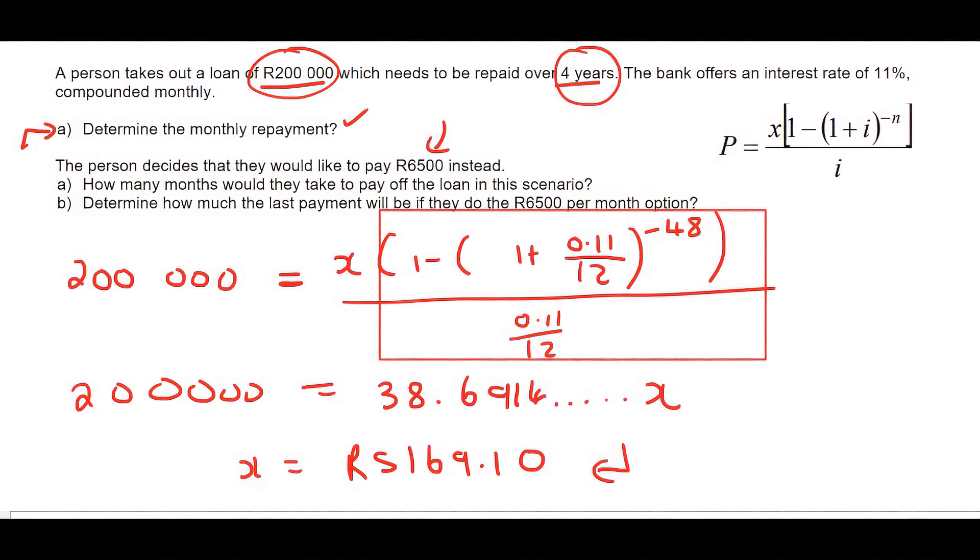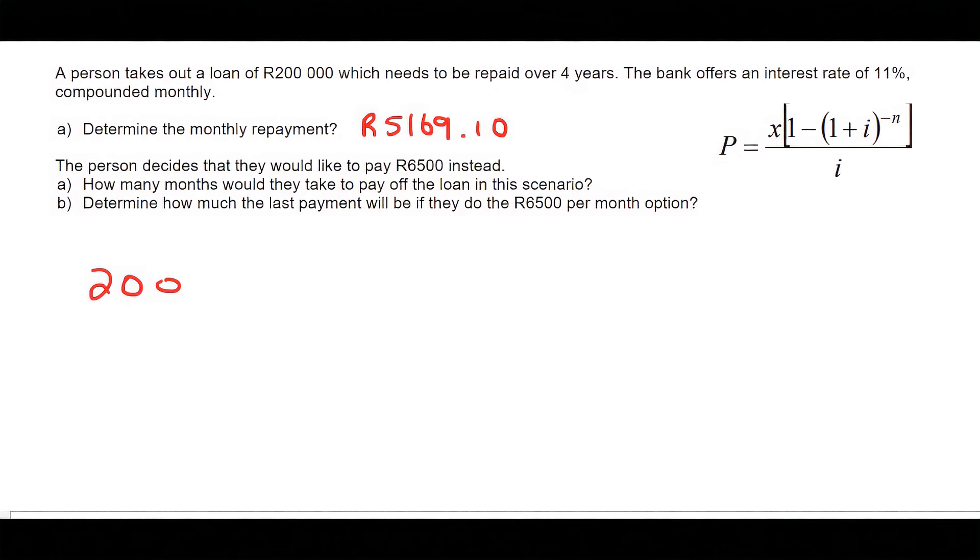They tell us this person is going to spend 6,500 Rand instead. How many months would they now take to pay off the loan? We know they're currently taking 48 months, but now we'll see how long they'd take if they pay 6,500 Rand per month instead. We're going to use the present value again: 200,000. Our monthly payment is not 5169, it's 6,500. The interest rate is still the same, but now we don't know how many payments they're going to make.